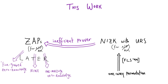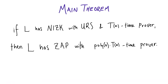For now, I want to focus on this transformation from NIZK to ZAP — in particular this theorem. If a language L has a NIZK in the uniform random string model with a t-time prover, then the language has a ZAP with a poly(n) times t prover. As a corollary, using the Lapido-Shamir protocol, we get ZAPs with sub-exponential time provers for NP.